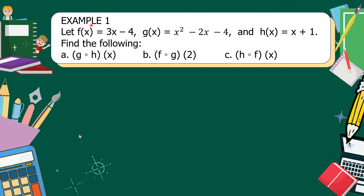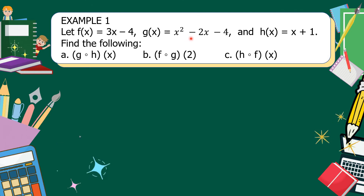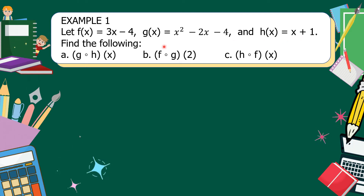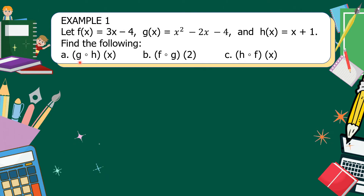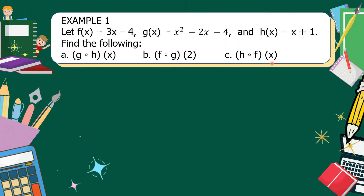Let's solve example number one. Let f of x equals 3x minus 4, g of x is equal to x squared minus 2x minus 4, and h of x is equal to x plus 1. Find the following: for letter A, g circle h of x; letter B, f circle g of 2; and for letter C, h circle f of x.